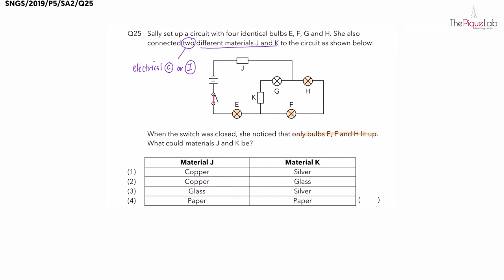Now electricity will start flowing from the batteries. It's going to flow through bulb E. At this junction, should electricity flow upwards or to the right? Now if electricity were to flow upwards, then we will see bulb G lighting up. Since this is not the case, we know that electricity did not flow this path. So we have electricity flowing to the right, flowing to bulbs F and H and making its way back to the batteries like this.